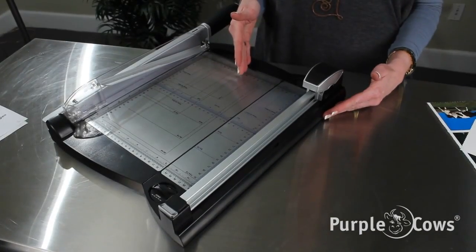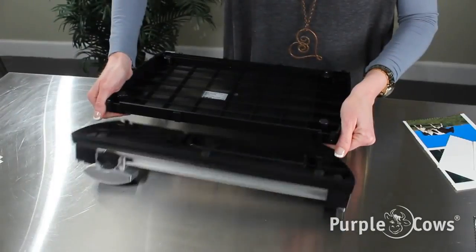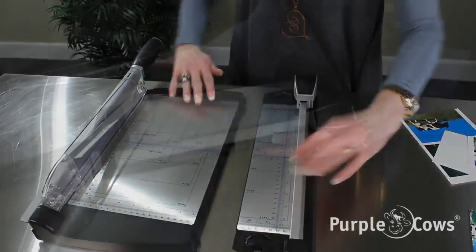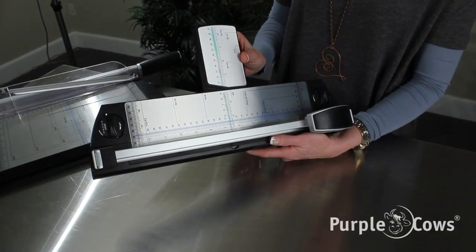One of the advantages of the two-in-one combo trimmer is the rotary and the guillotine separate. The rotary unit becomes easy to take along.